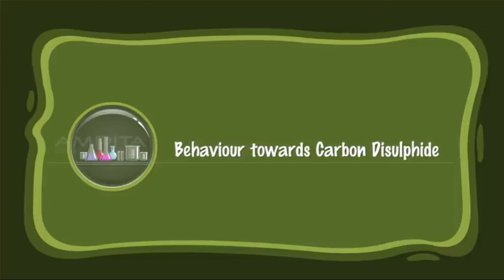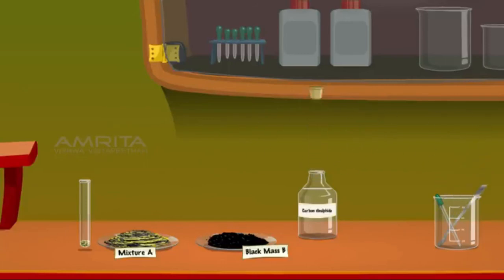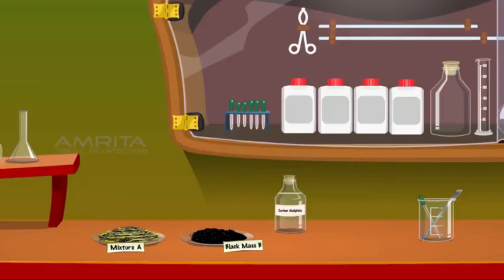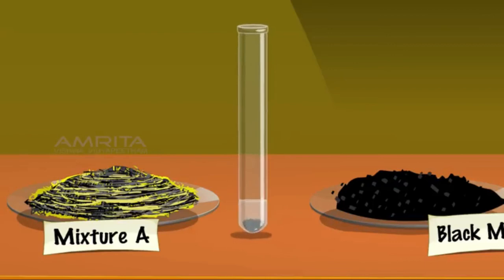Behaviour towards carbon disulphide: take a clean test tube and put a pinch of mixture A into it. Add a few drops of carbon disulphide and shake well. Sulphur first dissolves and reappears after some time — in mixture form, sulphur retains its properties. Take another test tube with black mass B and add carbon disulphide — no changes observed. In compound state (FeS), sulphur has lost its original properties after reacting with Fe.